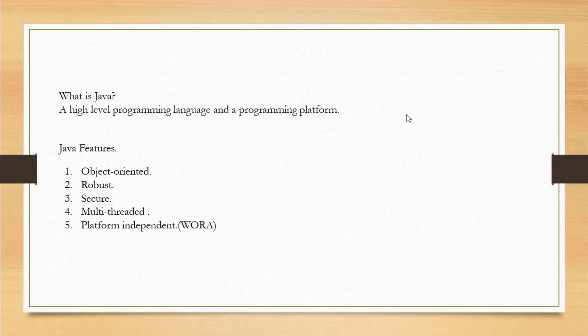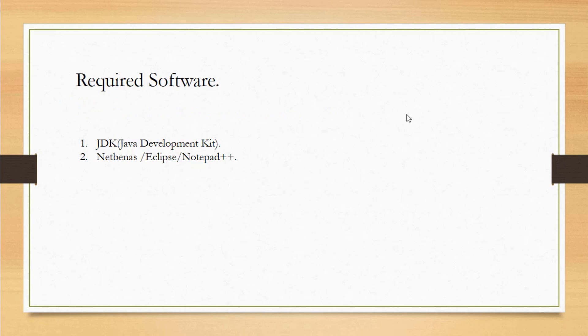Java is a platform independent language. You can write once and run everywhere. For example, if you use Windows operating system but then set up Java on Linux or Ubuntu, the environment setup works across platforms.